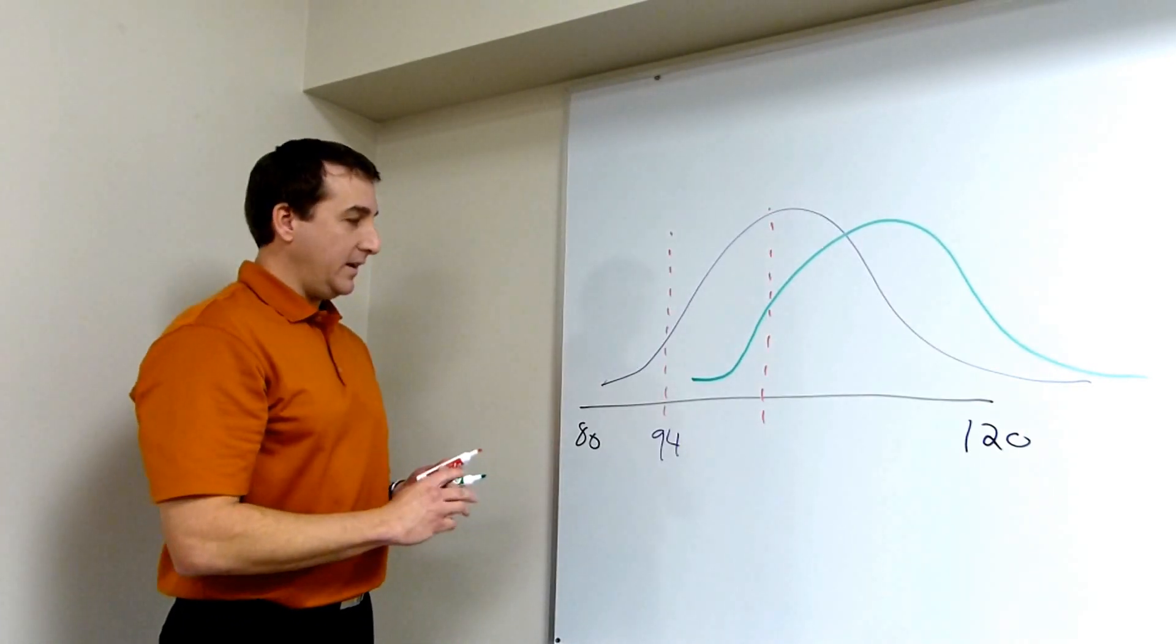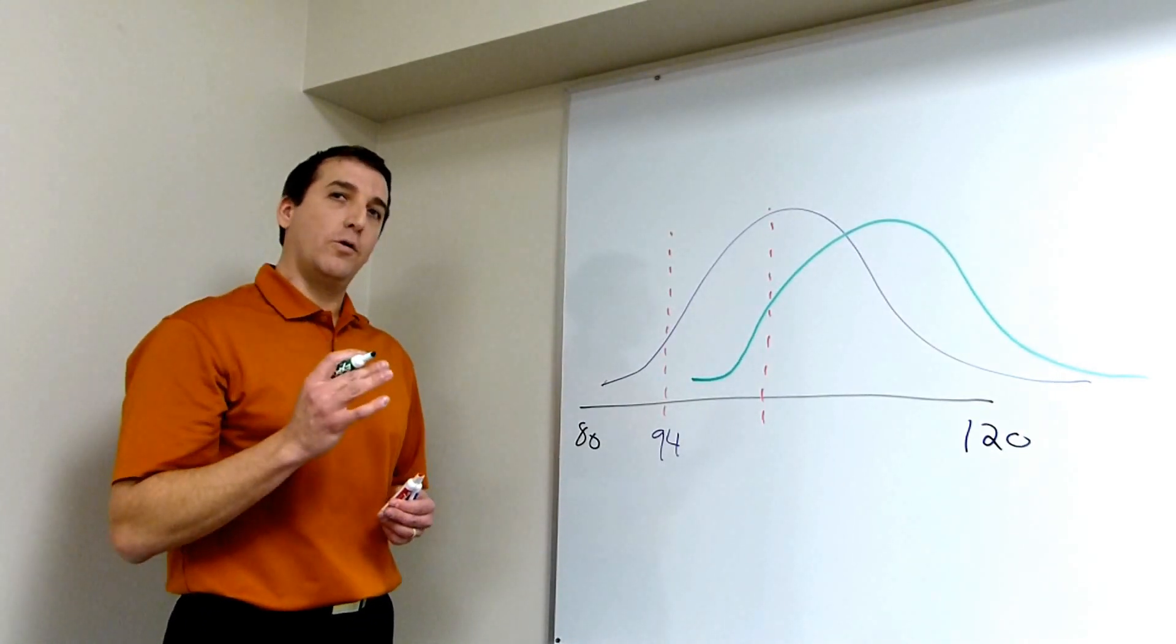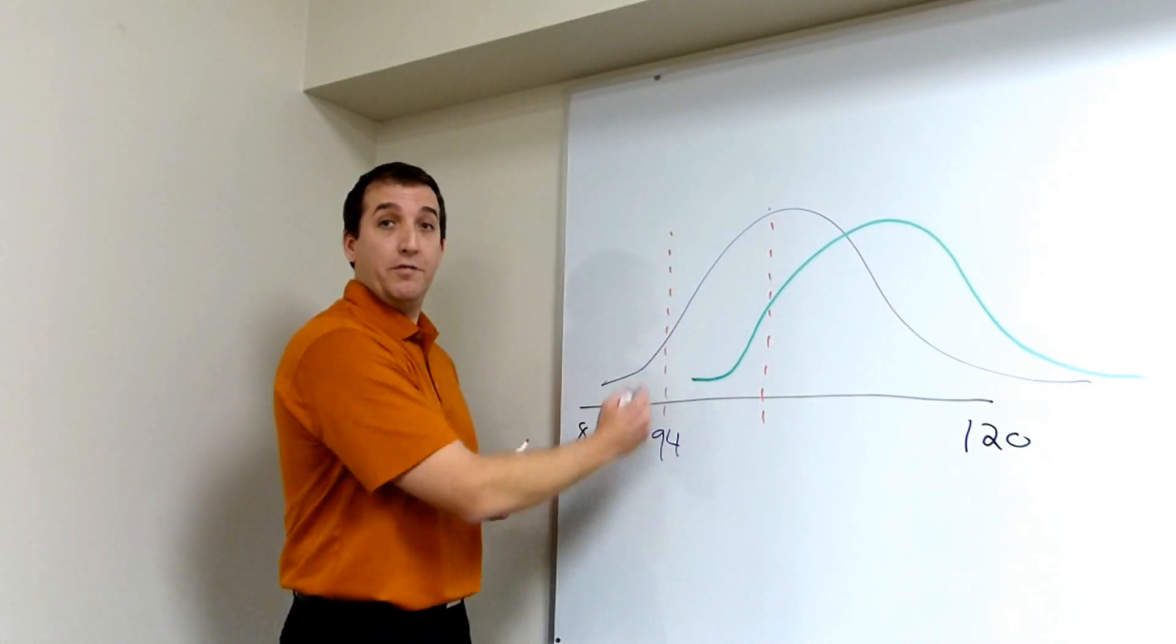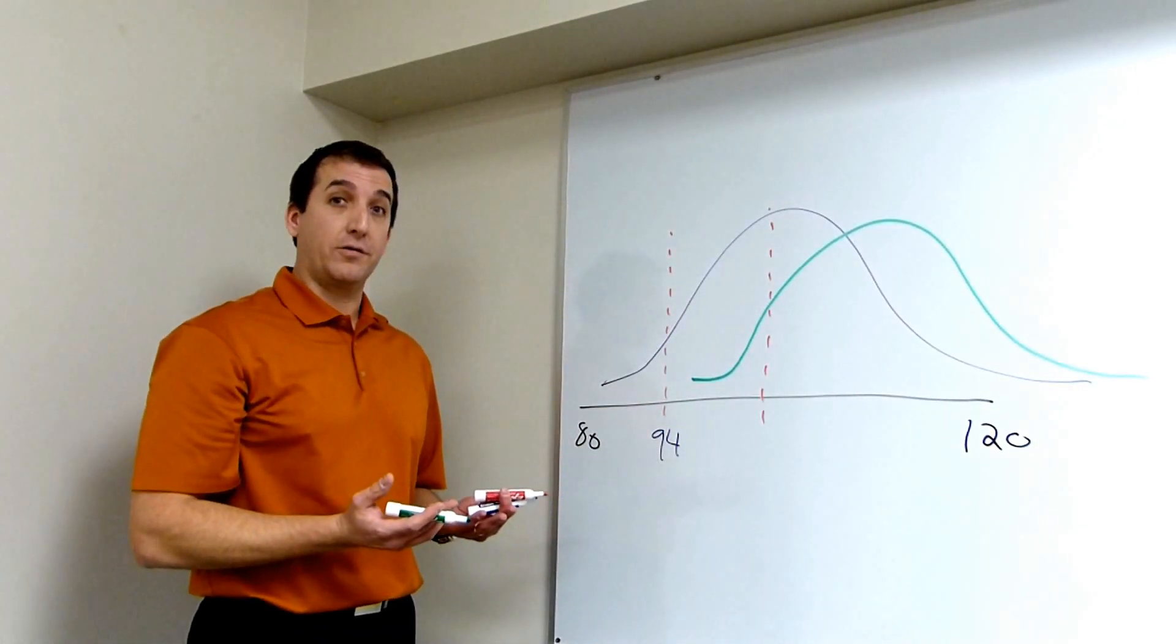So what you can see is if you apply the high school basketball cut point to professional soccer players, you will have missed a lot of the players that are at risk of injury.